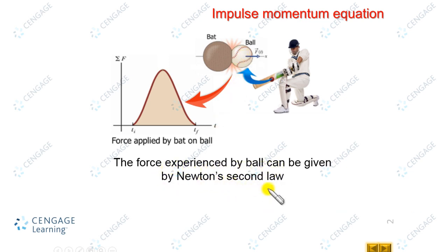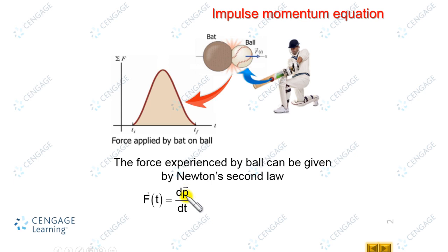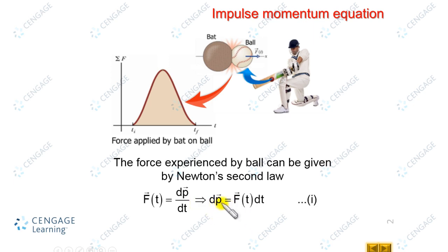Newton's second law gives the relationship between the force and change in linear momentum with respect to time. So here we can write F(t) equal to dp/dt, that is the rate of change of linear momentum with respect to time. We can rearrange this equation and write dp equal to F(t) dt. Let us call this equation number 1.